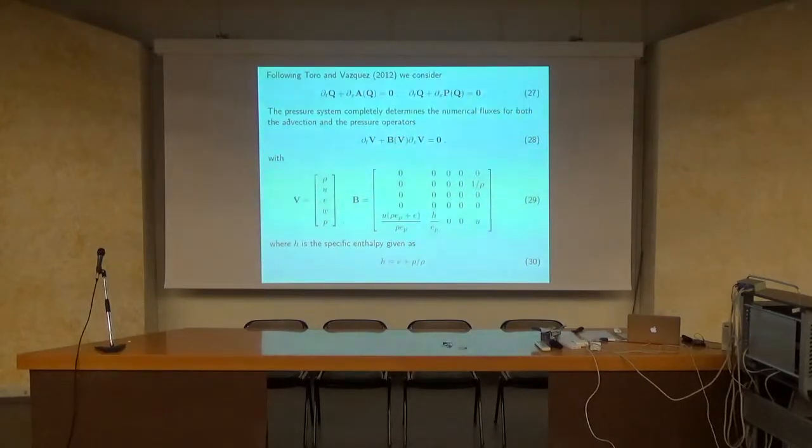The idea that we proposed with Elena was to consider two separate systems out of the splitting. The first system is the advection system, and this we call the pressure system. In the linear advection case, you can find that this is a natural way to do it and fit the information of one part into the other. We wanted to do the same for the Euler equations, but we found it was not necessary. The pressure system gives you all the information that you need to determine the advection part and the pressure part.